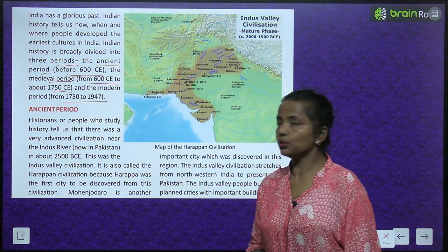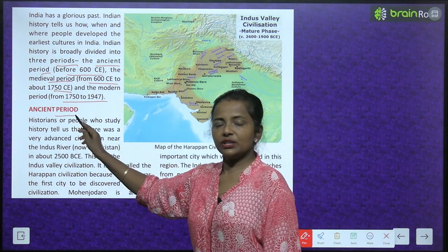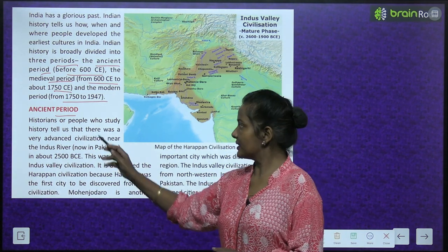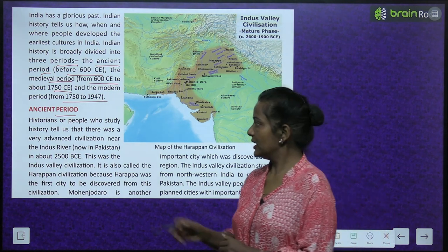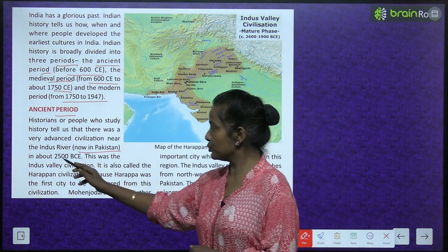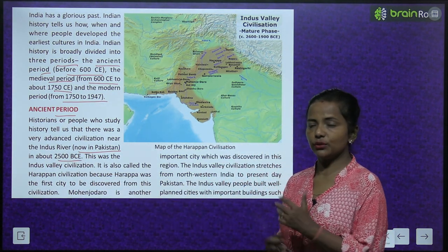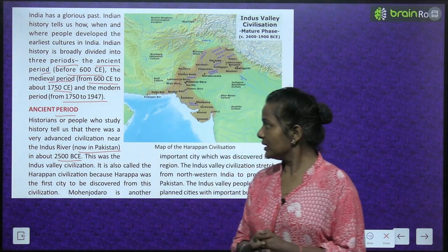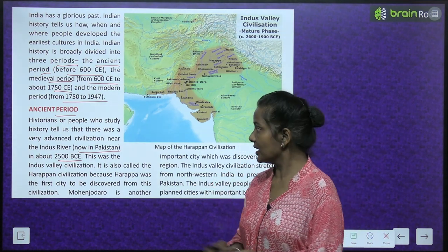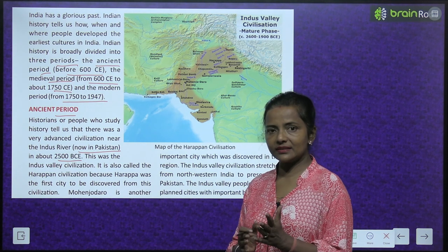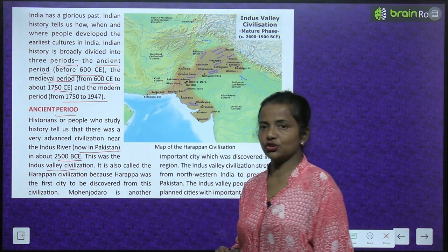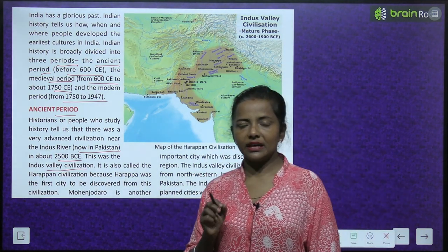From 1750 to 1947 is the modern period. Let's read about the ancient period. Historians — people who study history — tell us that there was a very advanced civilization near the Indus River, which is now in Pakistan, around 2500 BCE. This was the Indus Valley Civilization, and this advanced civilization was named the Indus Valley Civilization.